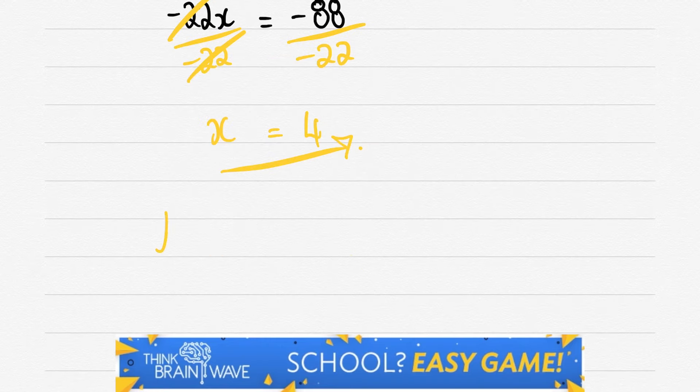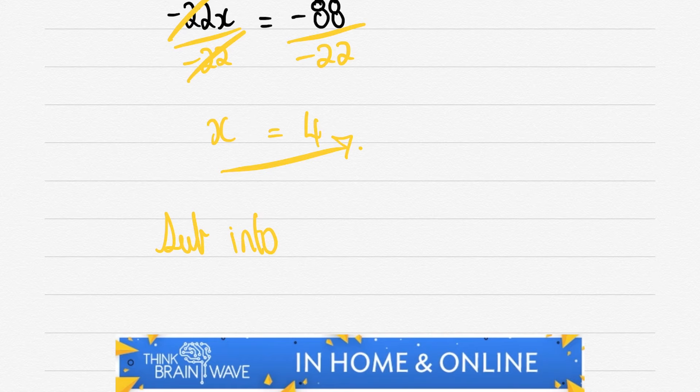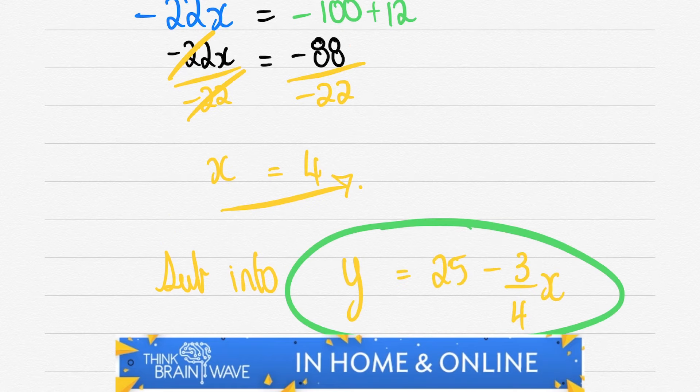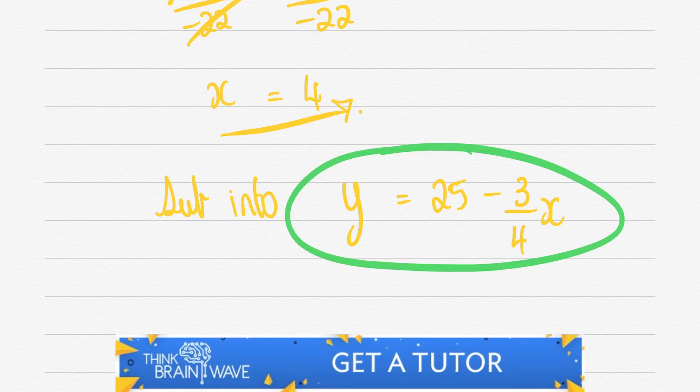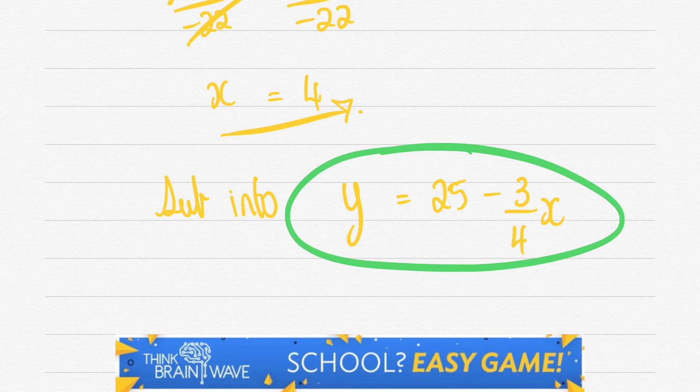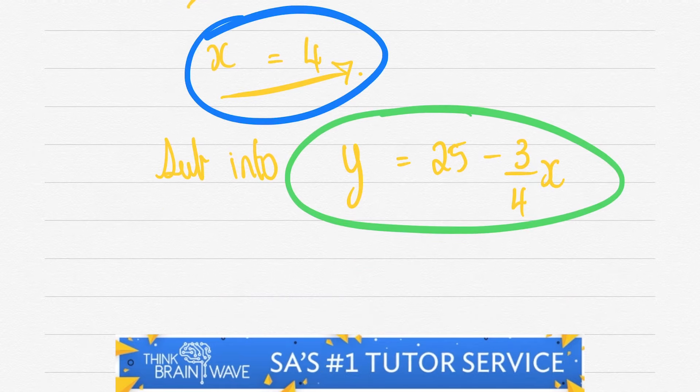Remember that this is not the last step. We still need to sub this x = 4 back into y = 25 - 3/4x. Right, let's get on that.